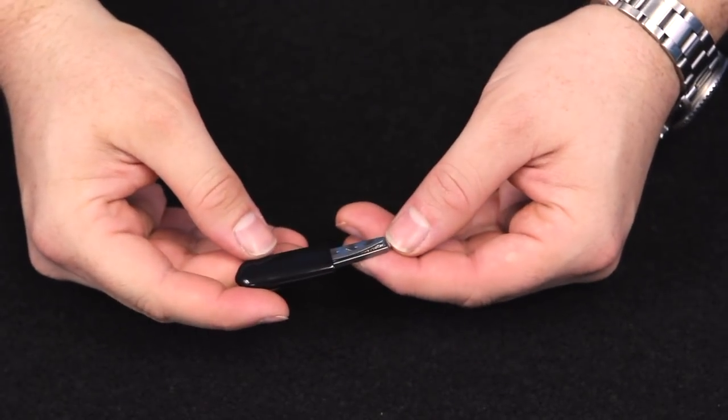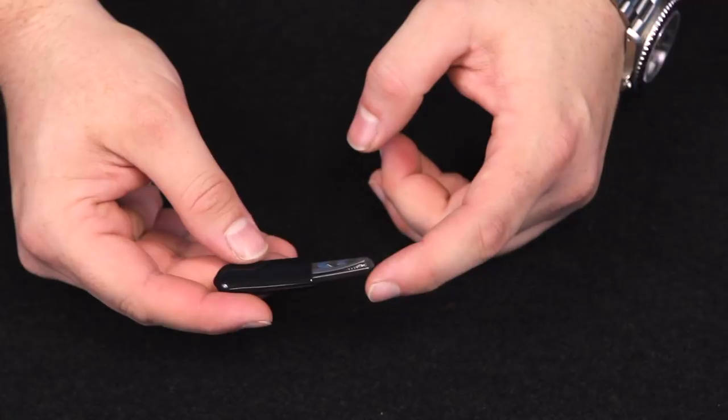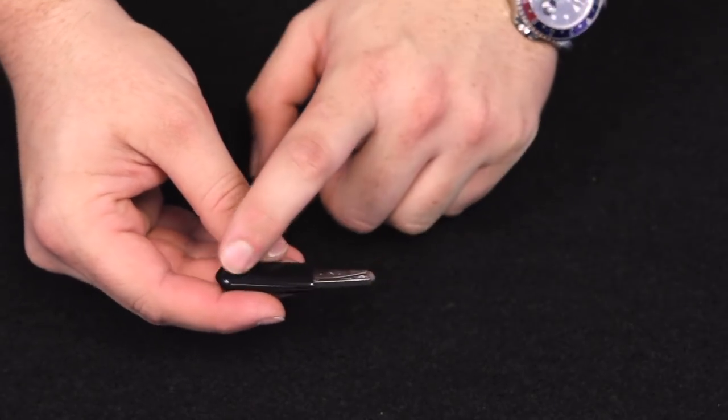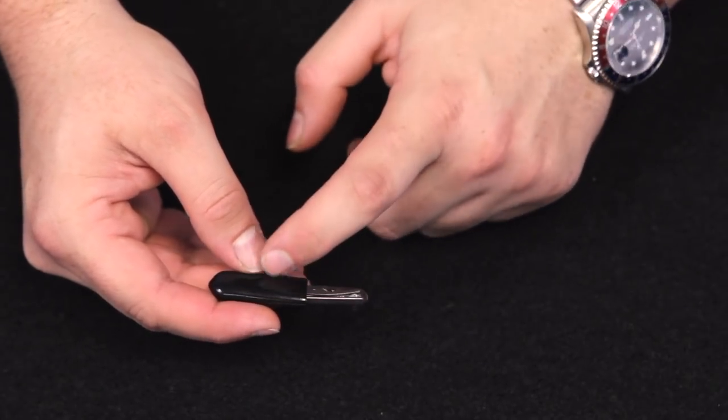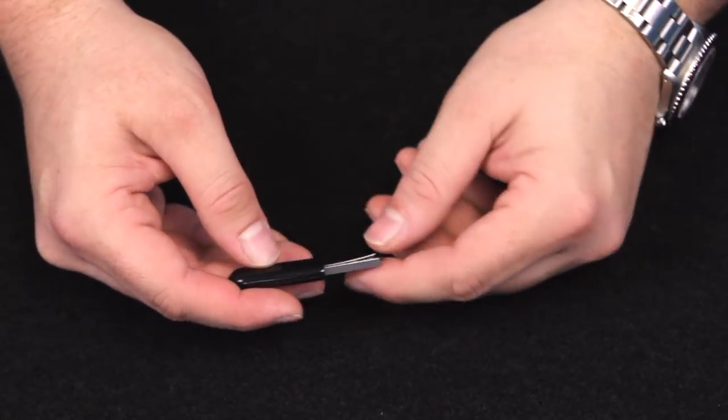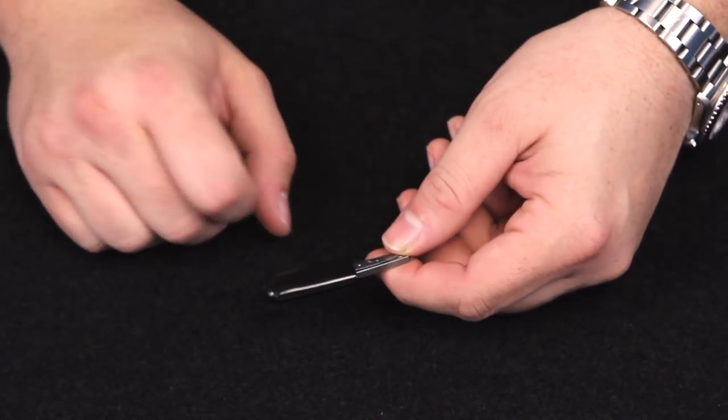Quick final notes on the OSS Tradecraft toolset. These are made in the USA from high-grade stainless steel and they measure approximately two and a quarter inches long, a half inch wide, and a quarter inch deep. The whole set, including the sheath, weighs in at only 0.3 ounces.